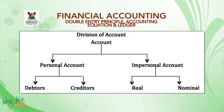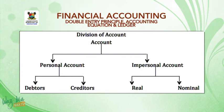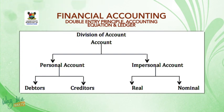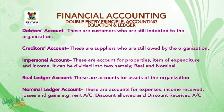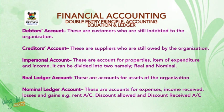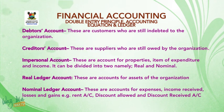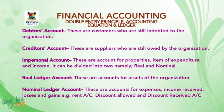We now look at the division of accounts. Under accounts, we have personal accounts and impersonal accounts. Under personal accounts, we have debtors and creditors accounts. Under impersonal accounts, we have real and nominal ledger accounts. Debtors accounts are customers who are still indebted to the organization. Creditors accounts are suppliers who are still owed by the organization. Impersonal accounts are accounts for properties, items of expenditure, and income — divided into real and nominal ledger accounts.